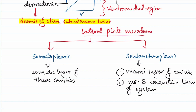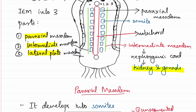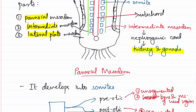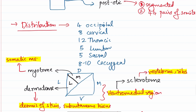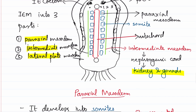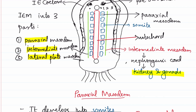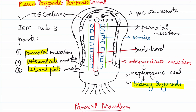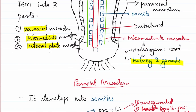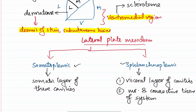With that, we have discussed what happens to the intraembryonic mesoderm and its derivatives. To summarize: the somites are present paraxially and are 44 in number. They have a ventromedial part and a dorsolateral part. The ventromedial part develops into the sclerotome, giving rise to vertebrae and ribs. The dorsolateral part develops into the dermomyotome — the dermatome gives rise to dermis of skin and subcutaneous tissue, and the myotome gives rise to somatic muscles. The intermediate mesoderm gives rise to the nephrogenic cord, which develops into the kidney and gonads. The lateral plate mesoderm develops an intraembryonic coelom, giving rise to the pleural, pericardial, and peritoneal cavities. The lateral plate mesoderm then divides into the somatopleuric and splanchnopleuric layers. That's all for this video — we have completed intraembryonic mesoderm and its derivatives.